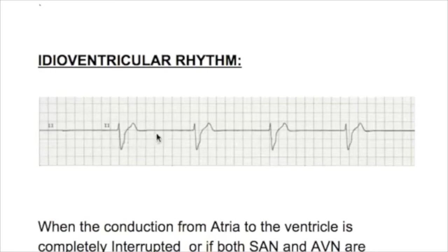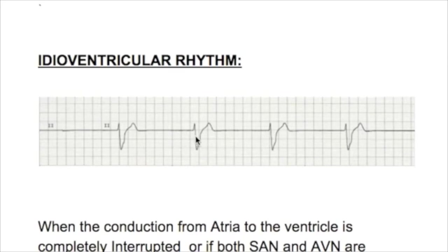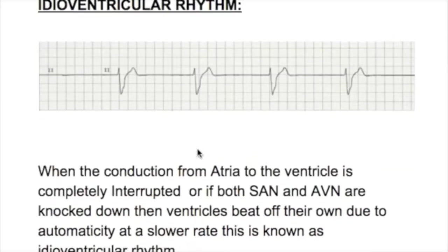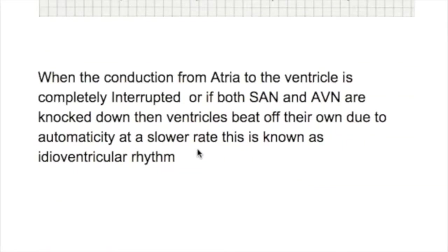The rate here is slow but regular. There are wide, bizarre QRS complexes of more than 0.12 seconds duration. The P wave may be absent, unrelated to the QRS, or may be buried in the QRS.